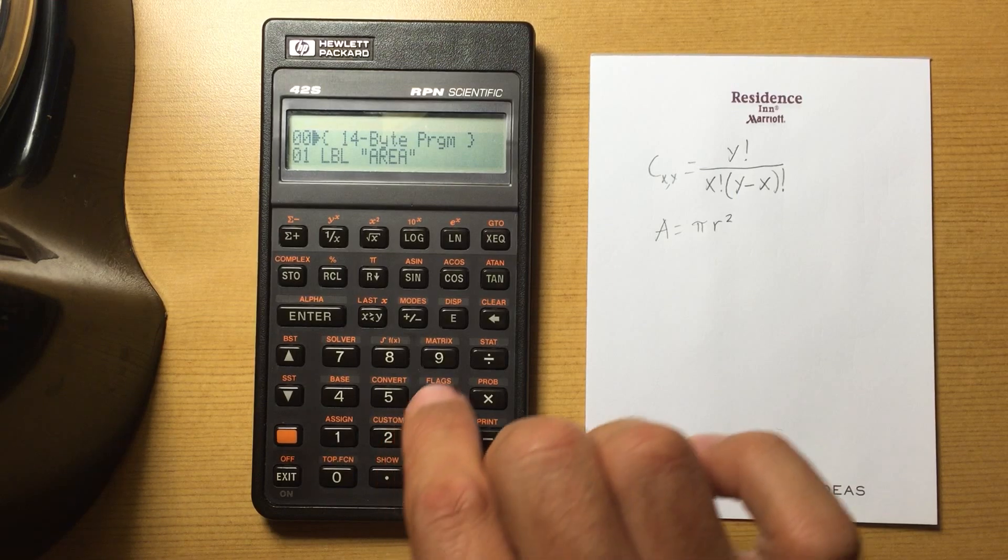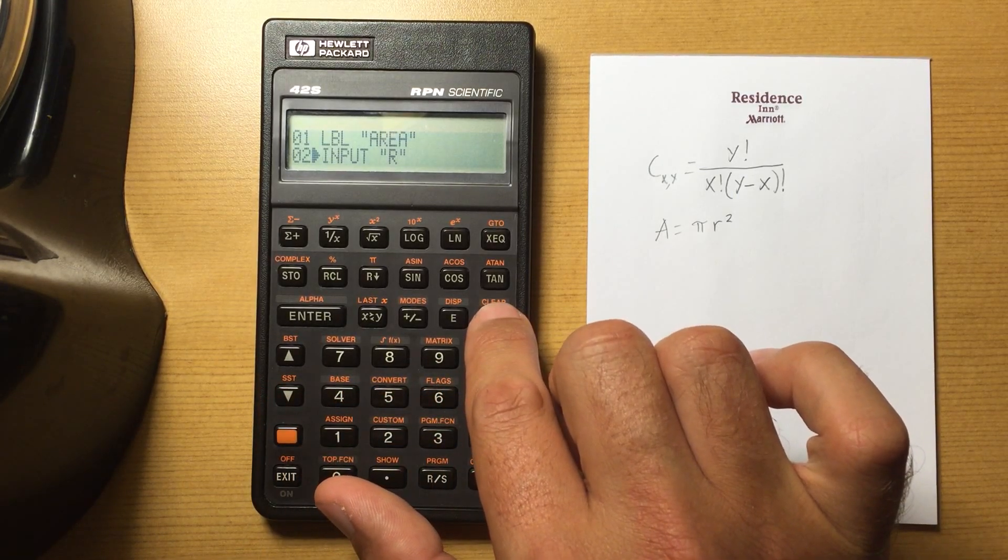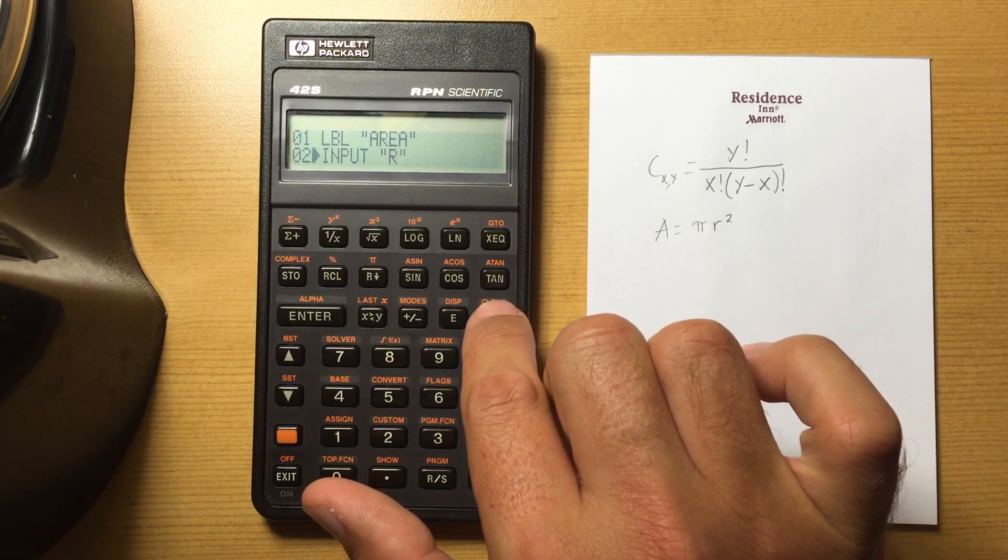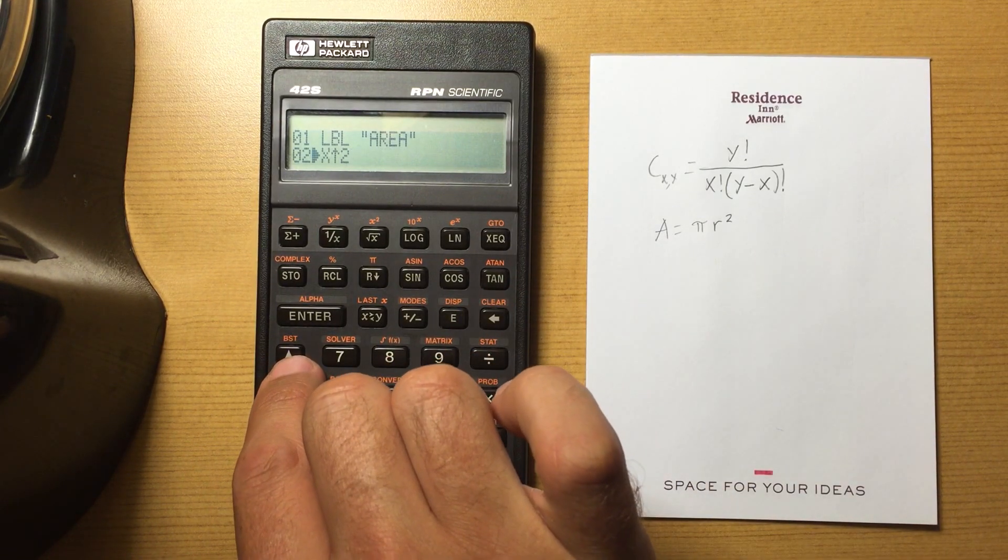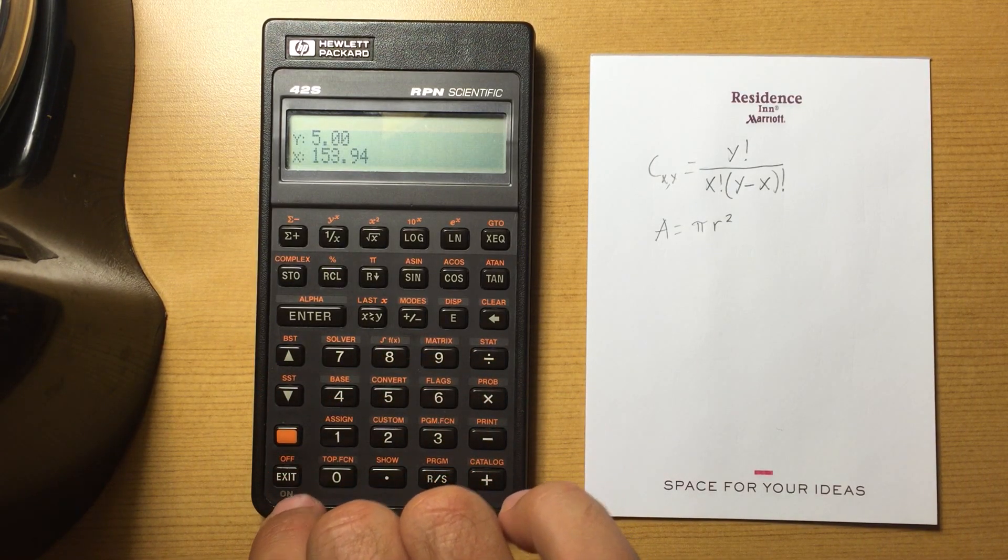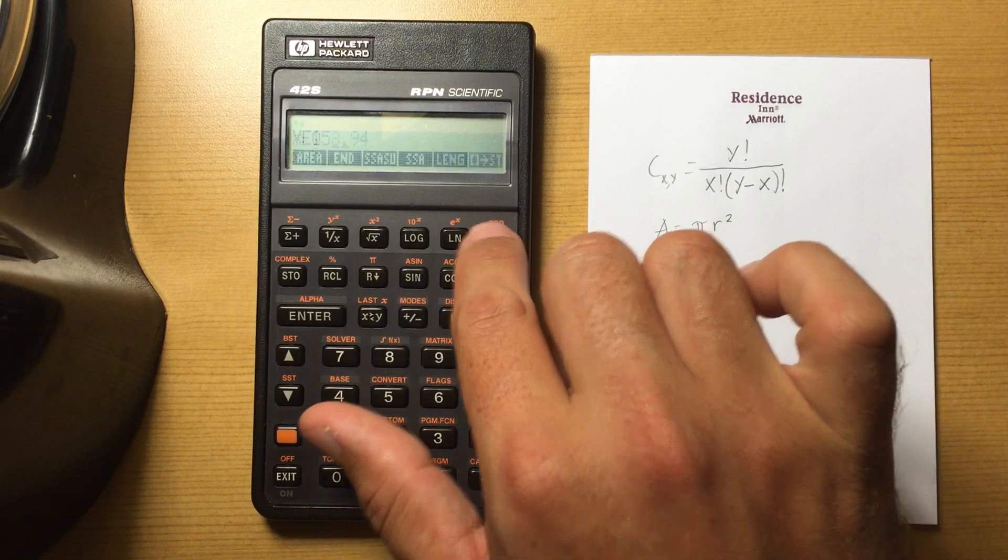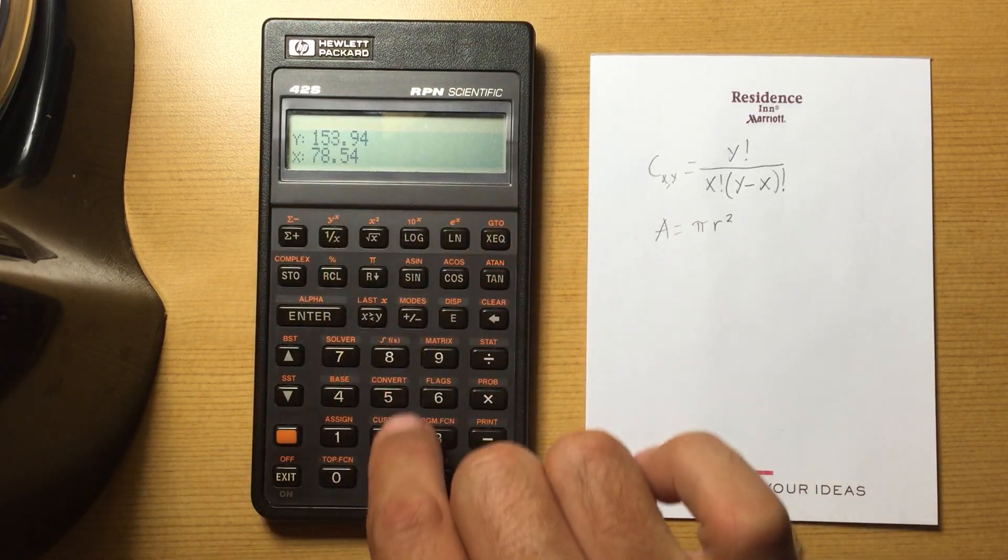And I could also have, instead of doing the input here, just said, use whatever is currently in the stack. So delete that line, and it uses whatever is in x and squares it. So now, if I go here, I do 5, execute area, and it gives me the same thing, 78.54.